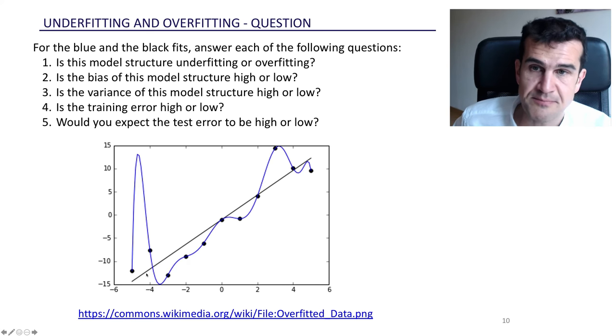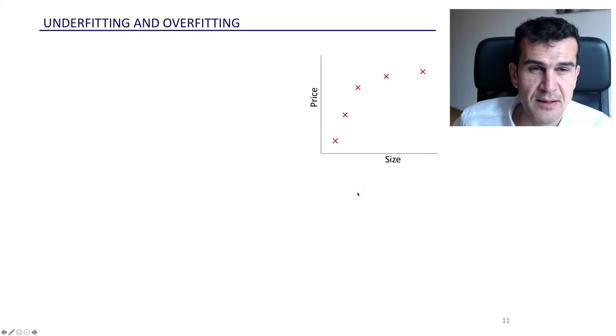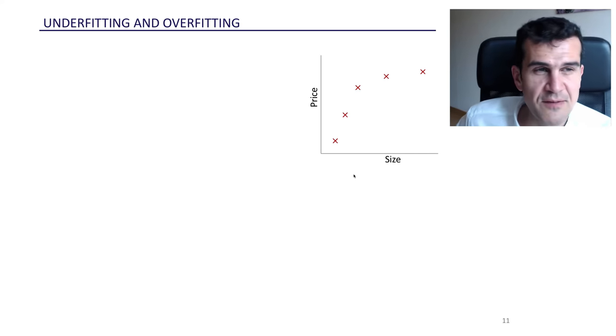And the black line is a simpler model. So its bias will be higher. Its variance will be lower. And all in all, it seems like the test error for this black line, I would guess will be probably lower than the test error for the blue line.